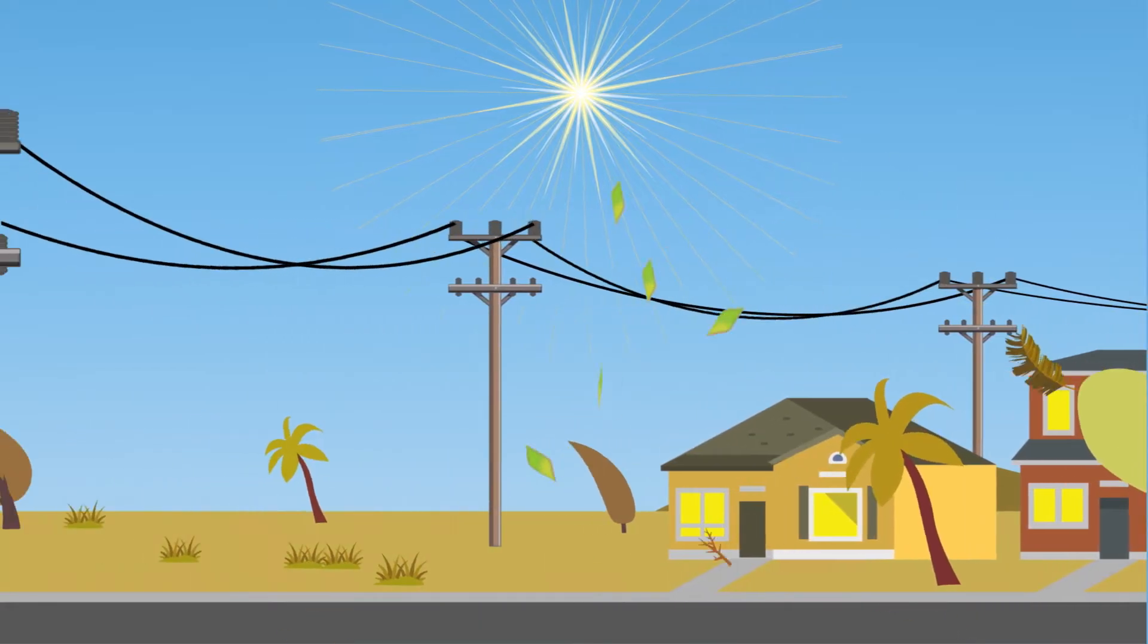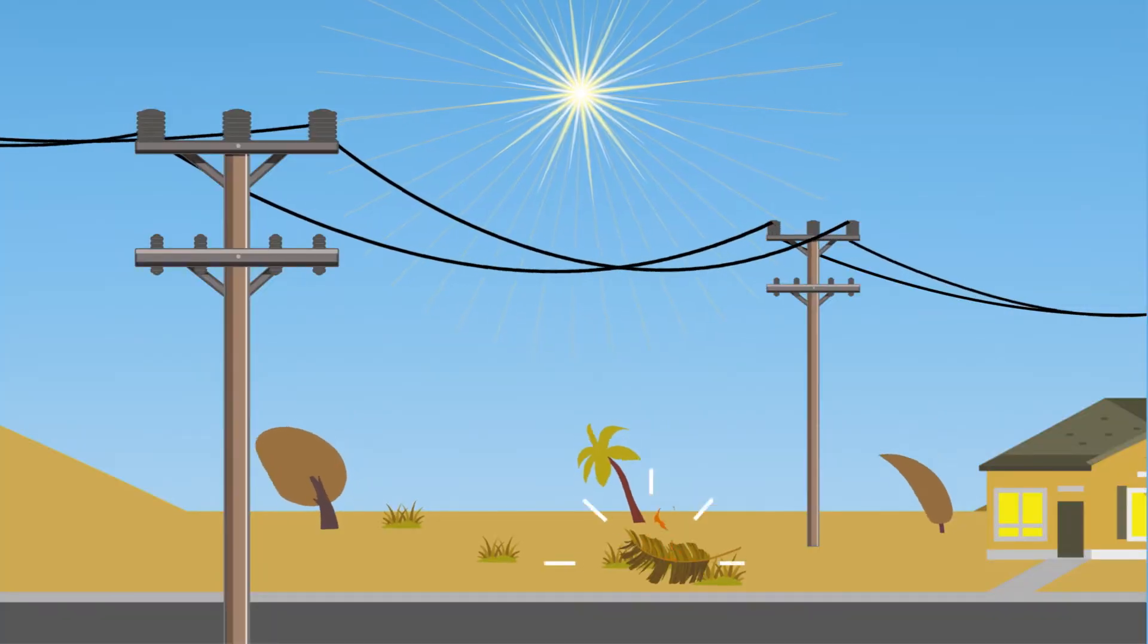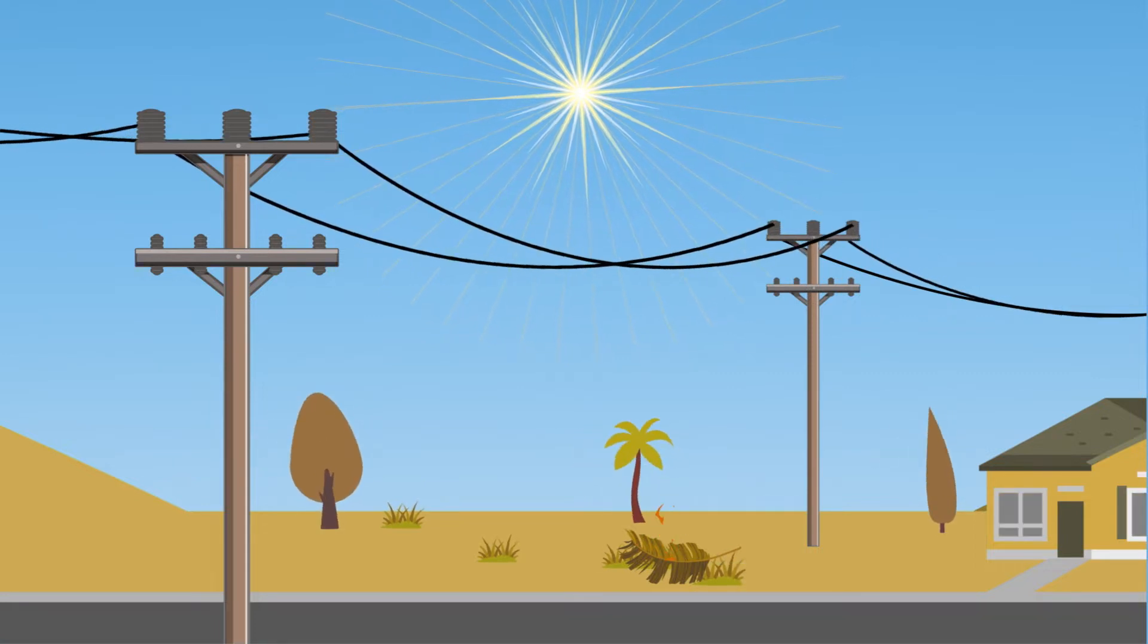Vegetation like palm fronds or branches, or objects like furniture covers, can become airborne and hit our wires, ignite, and then fall to the ground near dead grasses.